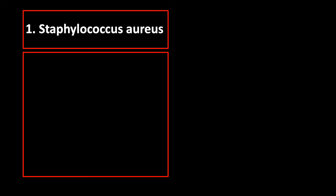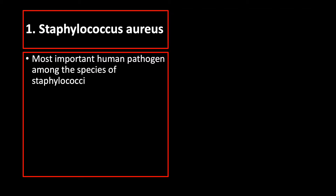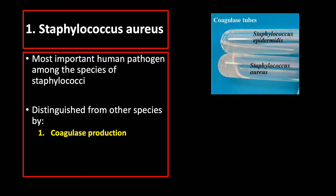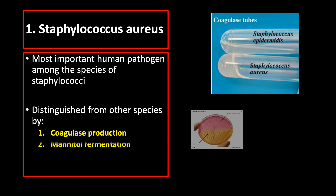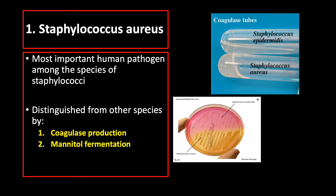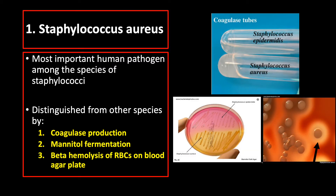Staphylococcus aureus is the most important human pathogen among the Staphylococci species. It is distinguished from other species by coagulase production, mannitol fermentation, and beta-hemolysis on blood agar plate.